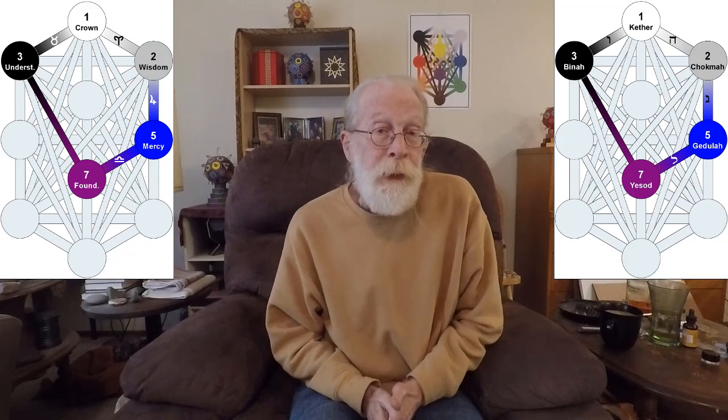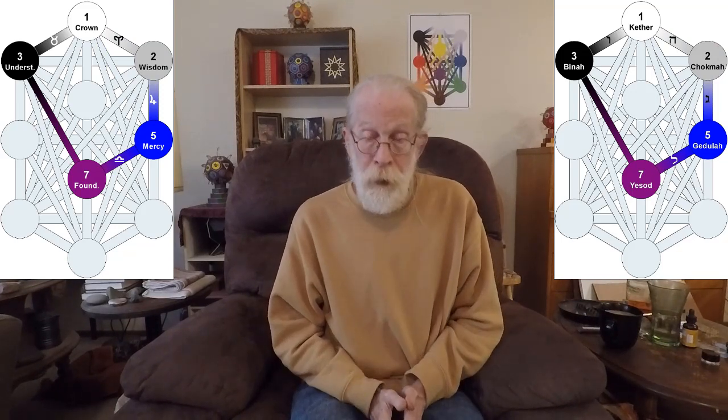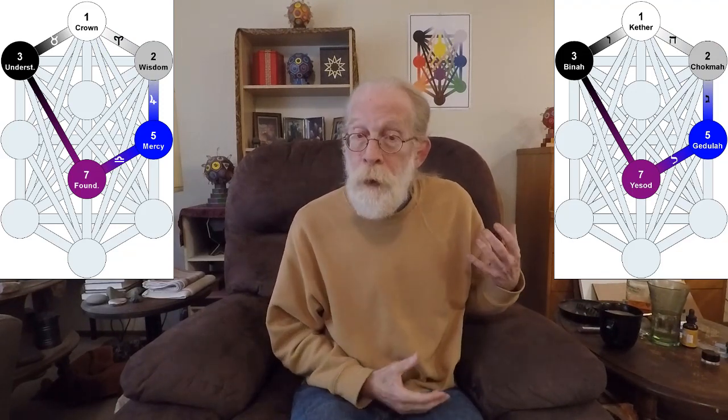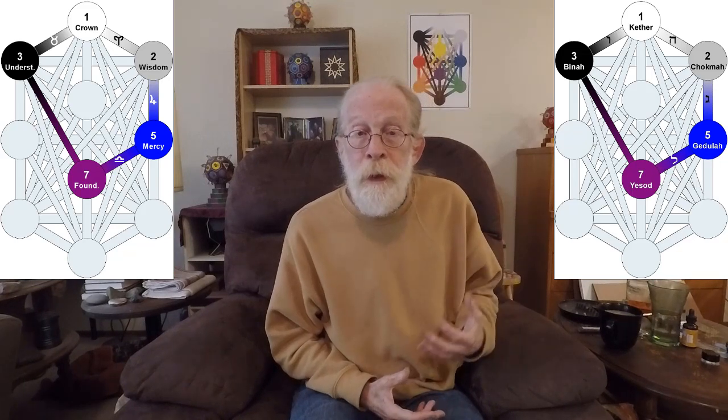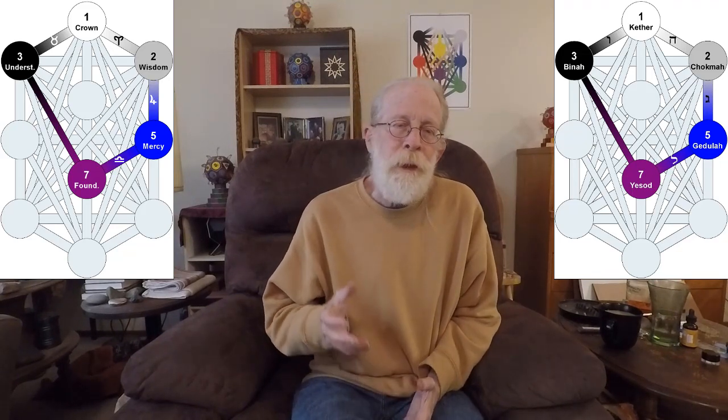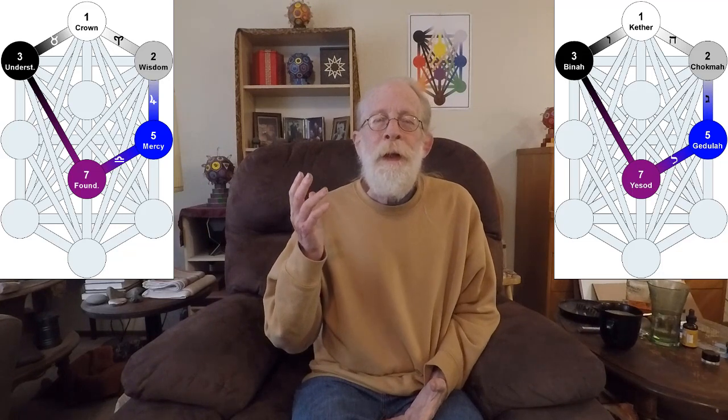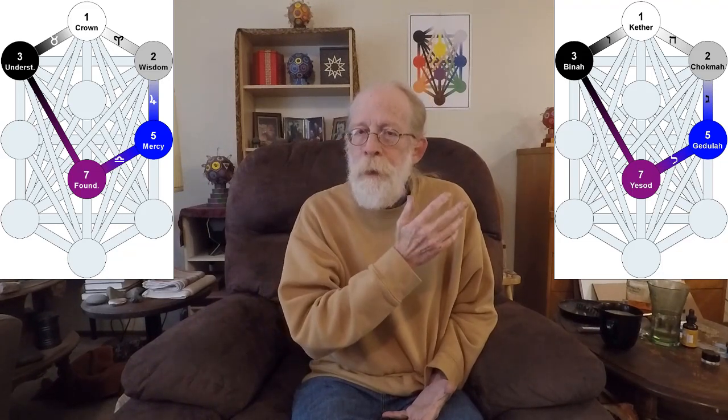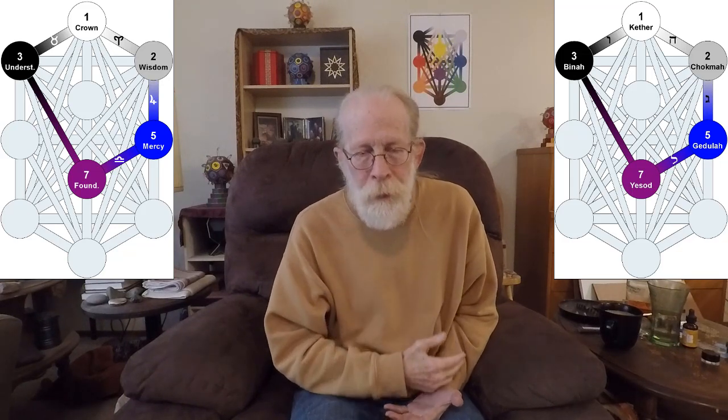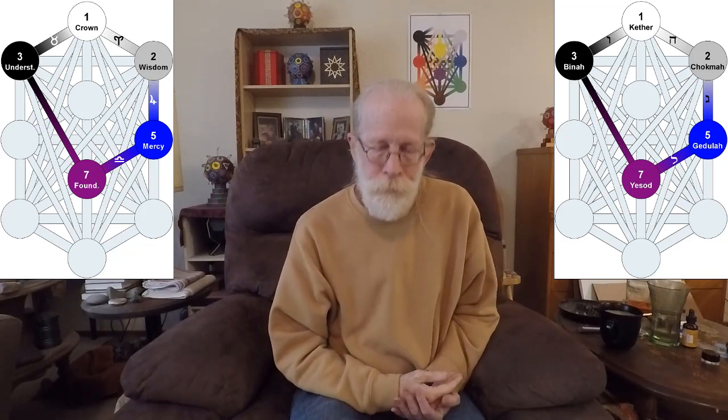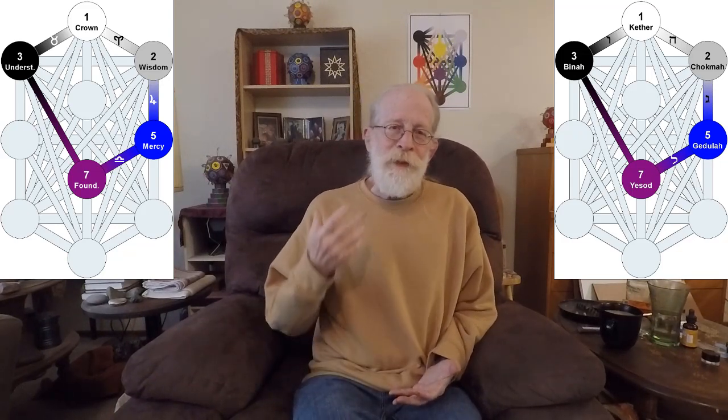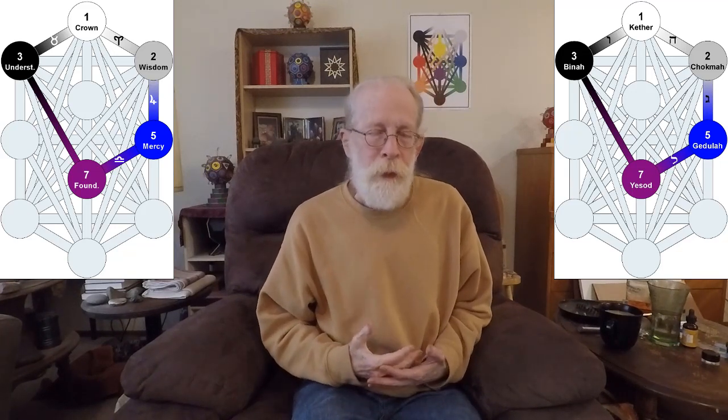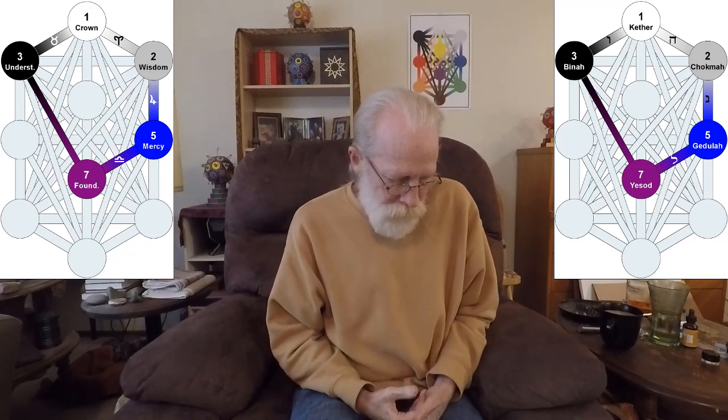The third gate is a pentangle, and it starts as before from Gedula to Yesad, Yesad straight up to Binah, and then we go from Binah to Kether, and Kether to Chokmah, and Chokmah down to Gedula. So this gets the whole supernal realm involved.